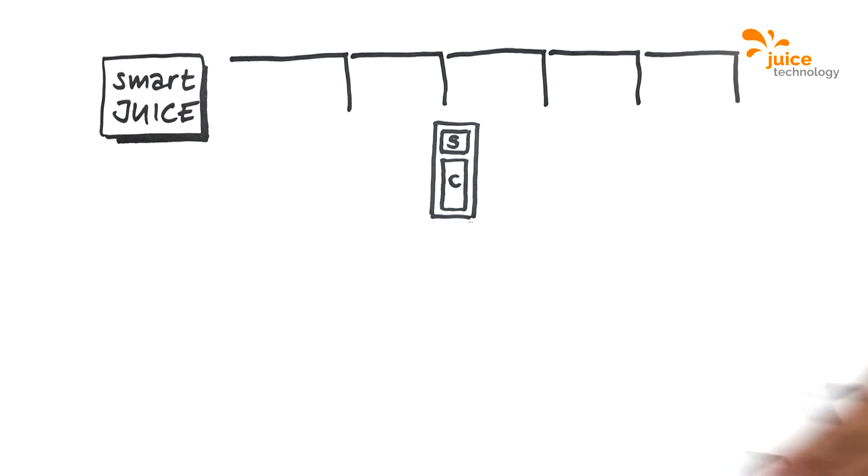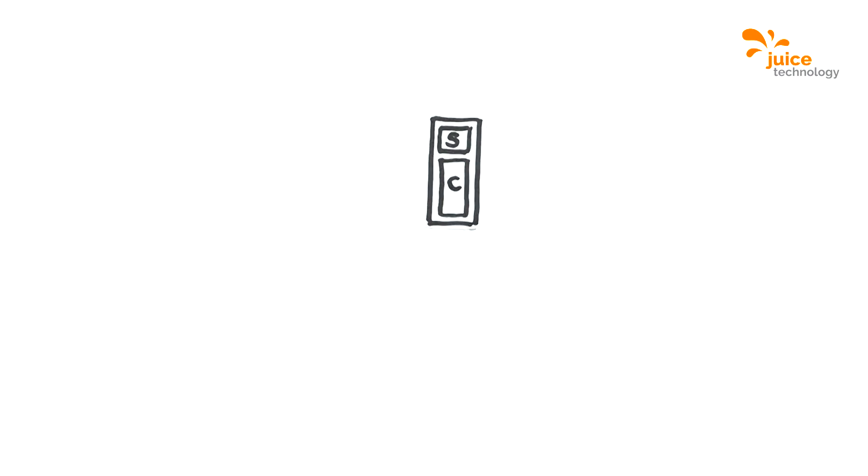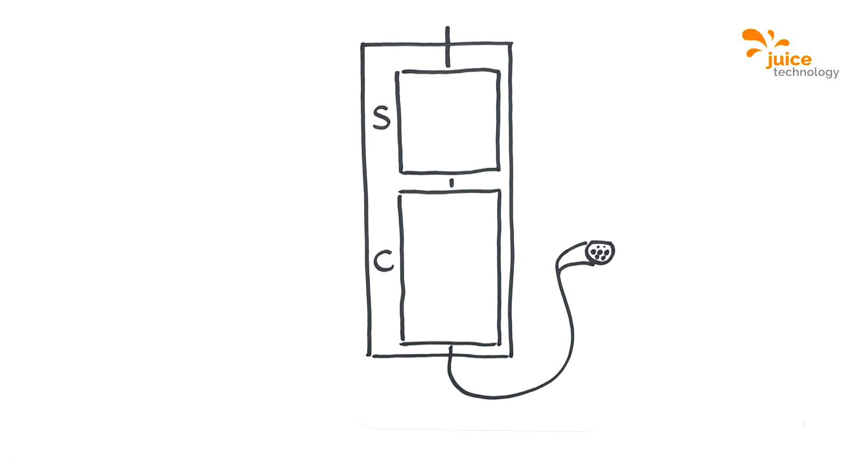And now, let's take a look at the charging box. Smart Juice sends the information for this to the charging station's software directly.